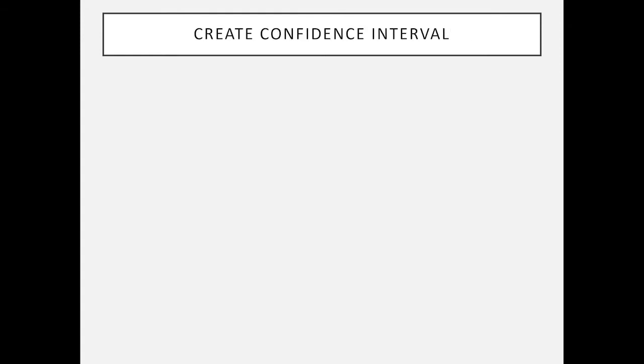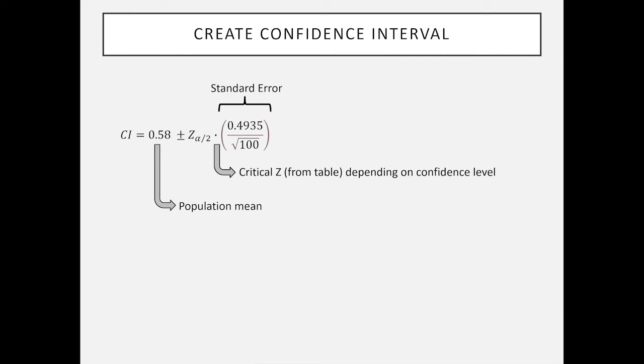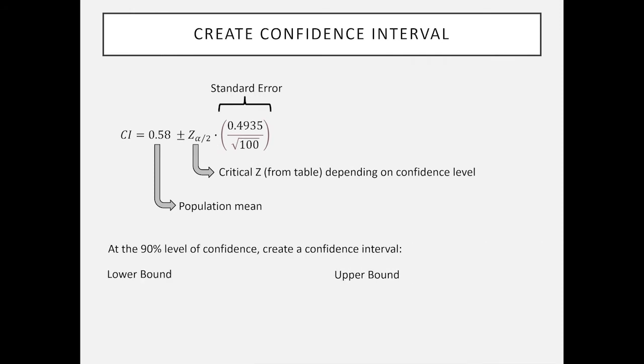We can create a confidence interval using the calculations on the previous screen. The confidence interval is the population mean plus or minus the margin of error where we've got the standard error as shown previously. We can choose a z from the critical table depending on the confidence level. For example, we choose the 90% level of confidence. Then we would write the lower bound as being 0.58 minus 1.645, that's alpha divided by 2 when alpha equals 10%, times 0.049.